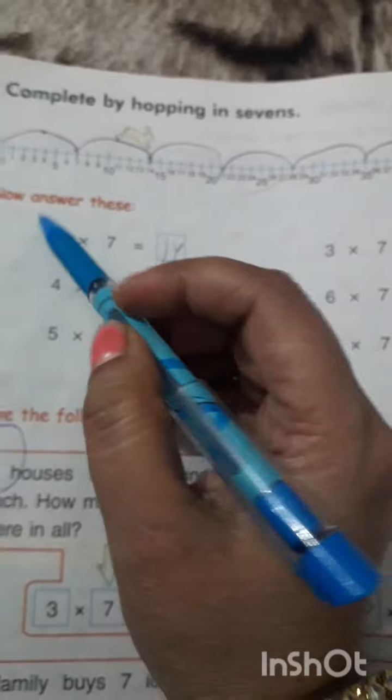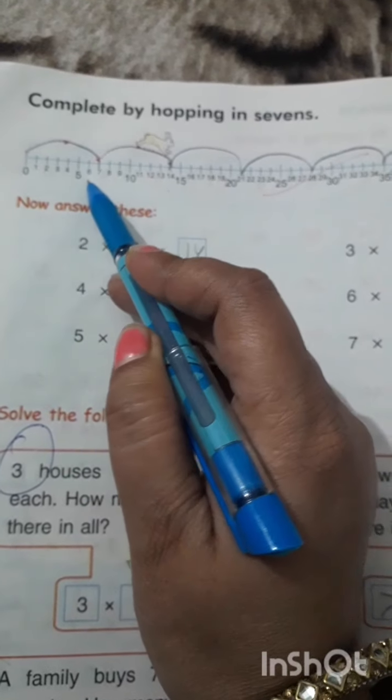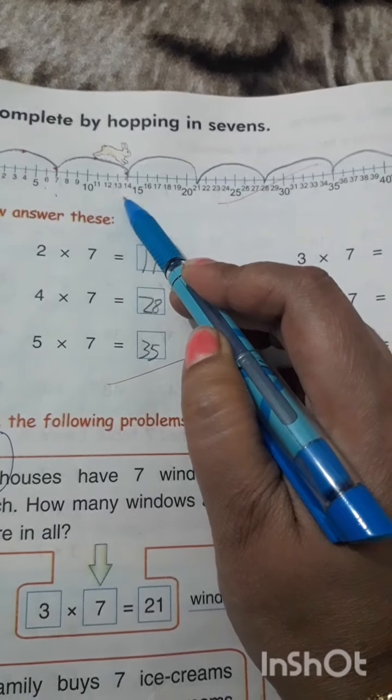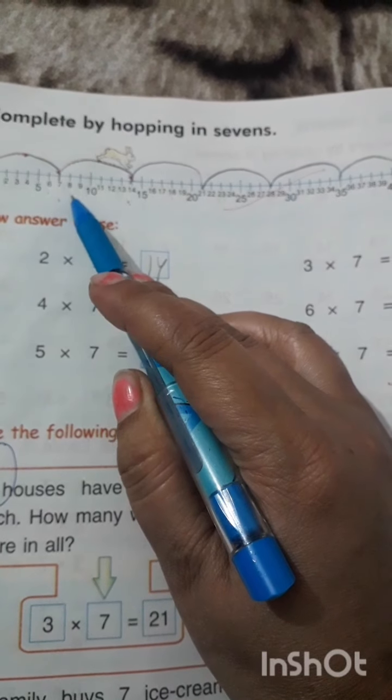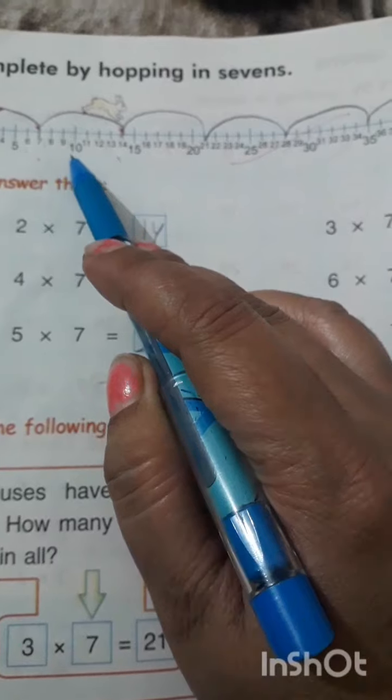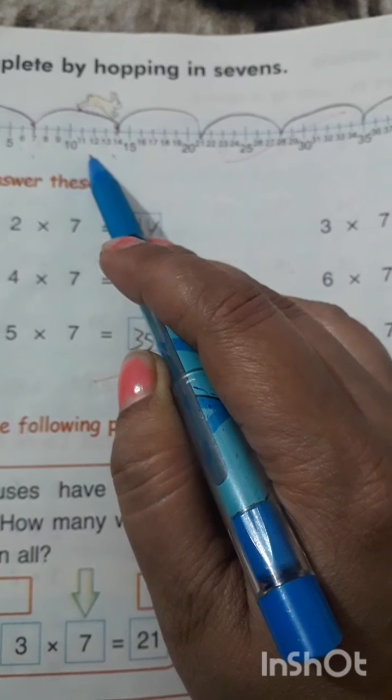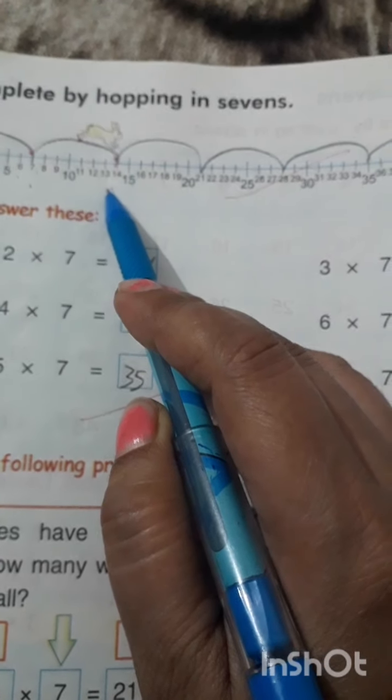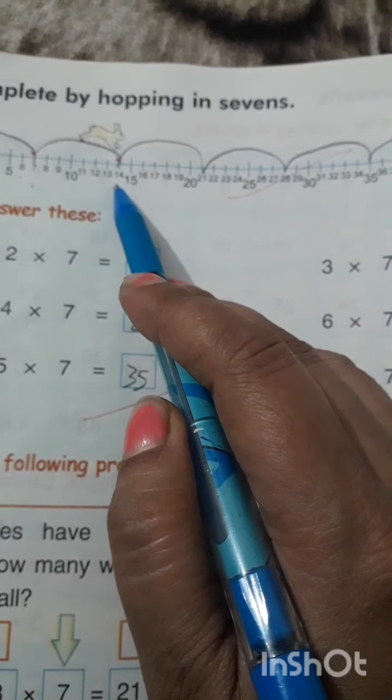First we will jump from 0 to 7. Again 7 jump. We have to skip 8, 9, 10, 11, 12, and 13. He will jump on 14.